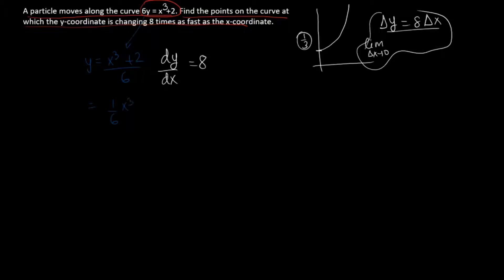We will have to take 1 over 6 x cubed plus 1 over 3. If we have to take a derivative with respect to x, then x cubed over 6 derivative will be 3x squared over 6, and 1 over 3 will be 0 because this is a constant.